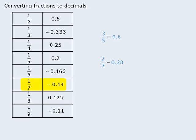Since 1 seventh is only approximately equal to 0.14, we cannot say that 2 sevenths is exactly equal to 0.28, so we write this with the approximation symbol. To convert 4 ninths, since 1 ninth is approximately 0.11, then 4 ninths is 4 times 0.11, which is 0.44. Again, since 1 ninth is only approximately 0.11, we can only say 4 ninths is approximately 0.44.